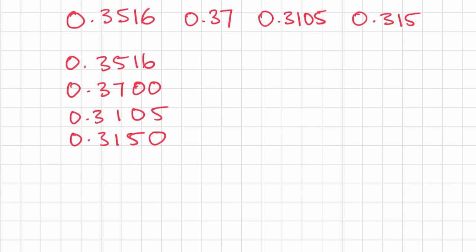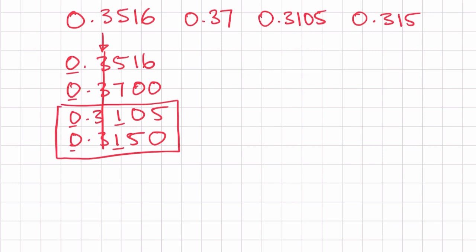Now we can compare starting from the left. On the units column they're all zeros — the same. The tenths digit they're all threes — the same. Moving to the hundredths column, we see 1 and 1 for two of the numbers — both the same. So we move to the thousandths column and we have 0 and 5, so we can say 0.3105 is the smallest.